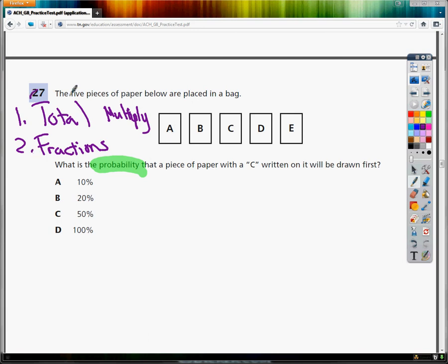Now, my total, which is what I need, would be the five pieces. The second part is the fraction. In my fraction, my total goes on the bottom, and my preferred goes on top. That's the thing they ask about.